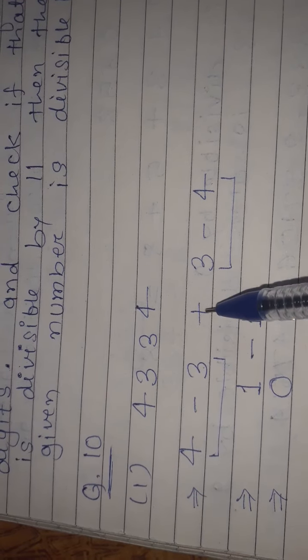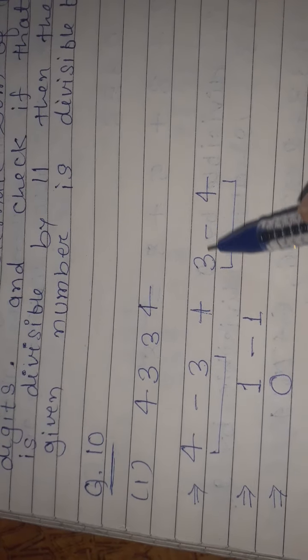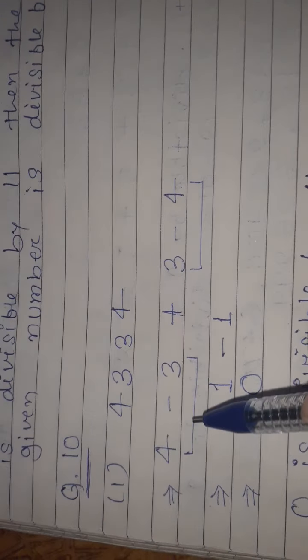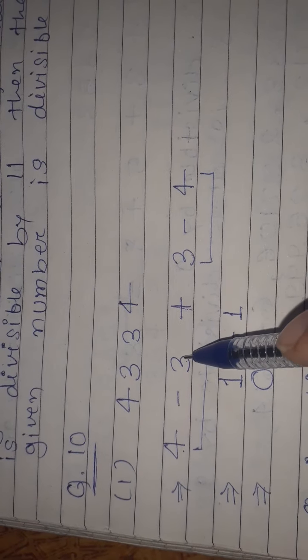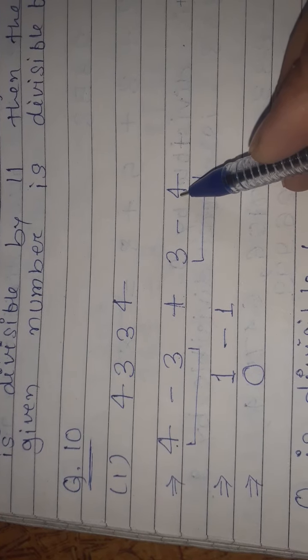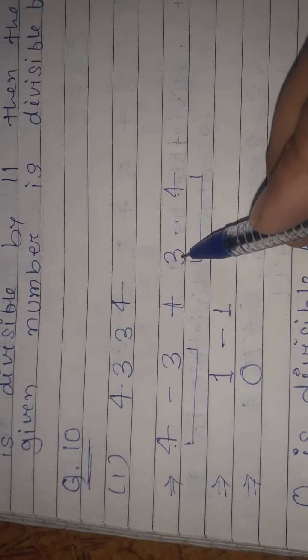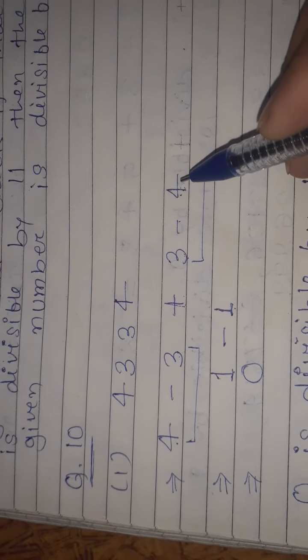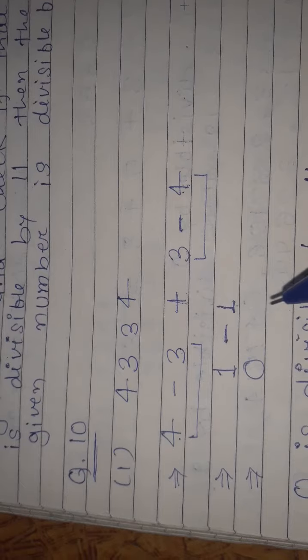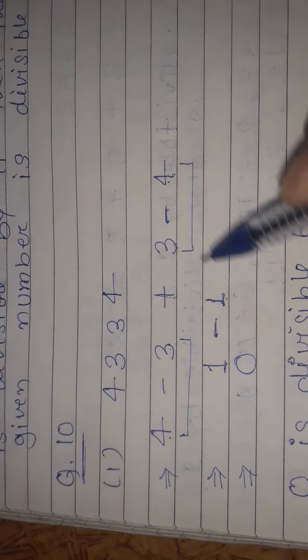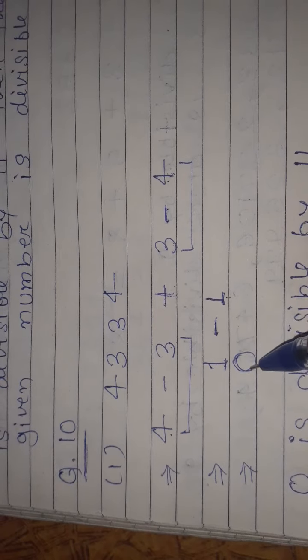For 4334, we follow the pattern plus minus plus minus. So 4 minus 3 is 1, plus 3 is 4, minus 4. When we calculate: 4 minus 3 plus 3 minus 4, we get 0.